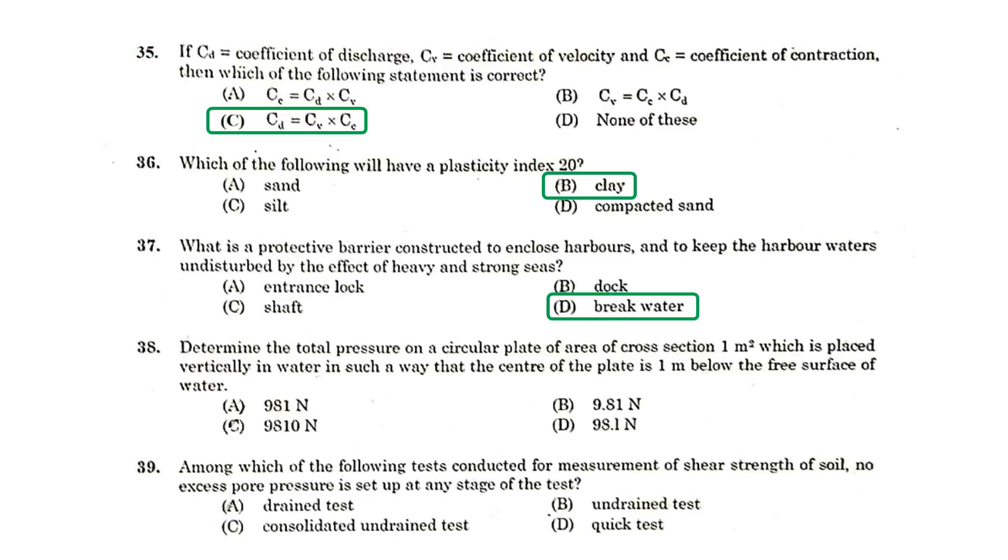Determine the total pressure on a circular plate of area of cross-section 1 m² which is placed vertically in water in such a way that the center of the plate is 1 m below the free surface of the water. The answer is 9810 N.